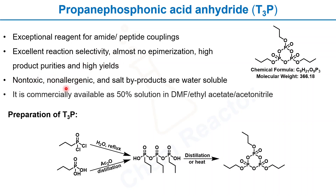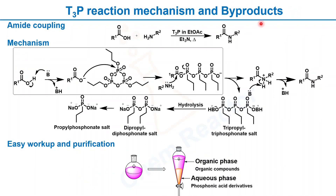Along with these characteristics, T3P is also non-toxic and non-allergenic, and the salt byproducts formed in this reaction are water-soluble, which makes it very easy to do the reaction workup and purify the products. T3P is commercially available as a 50% solution in DMF, ethyl acetate, or acetonitrile solvents. T3P can also be prepared in the laboratory from propyl phosphonic dichloride as well as from propyl phosphonic acid.